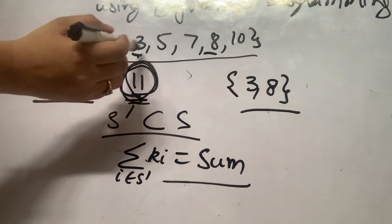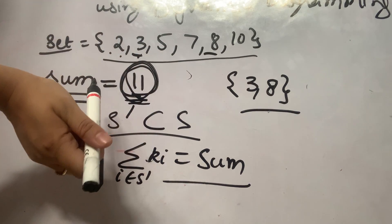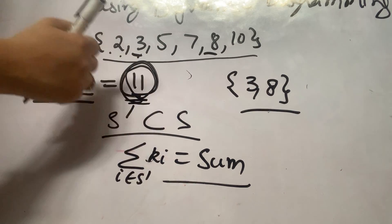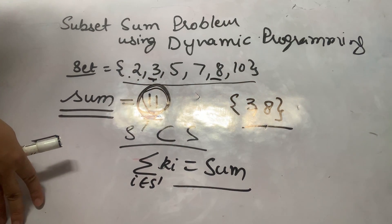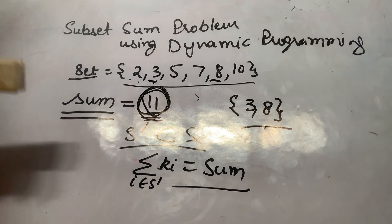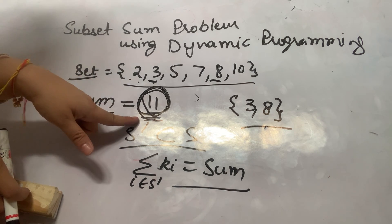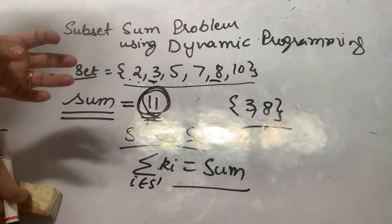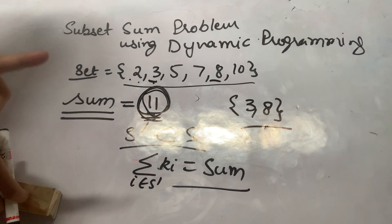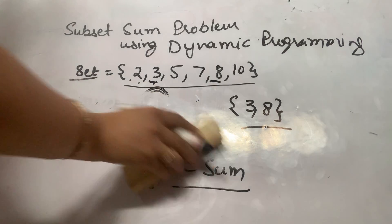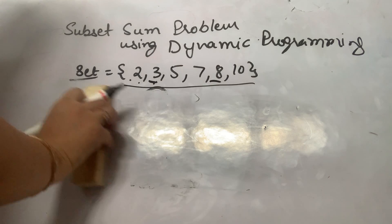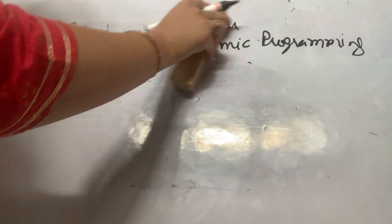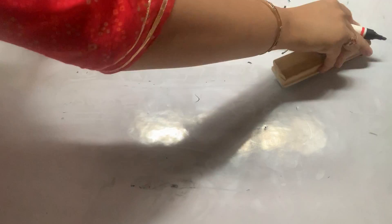As we can see, if we go by brute force it becomes an exponential time problem because we have to check all possible subsets. So we come to the dynamic programming approach. In the DP approach, we break the problem into overlapping sub-problems. Since the sum is 11, we check all possibilities of getting a 0 sum, 1 sum, 2 sum, 3 sum, and so on up to 11.